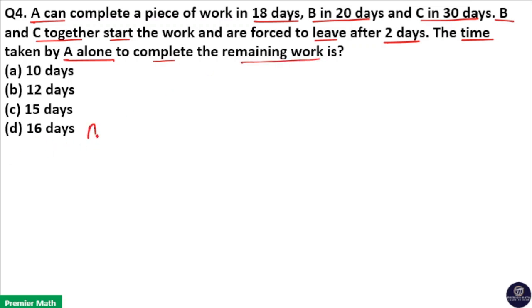Here A can complete the work in 18 days, B can complete the same work in 20 days, and C can complete the same work in 30 days. Now all are doing the same job.